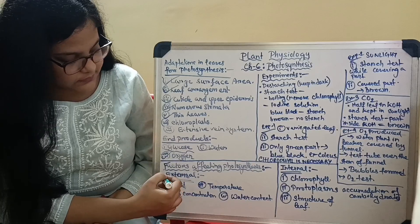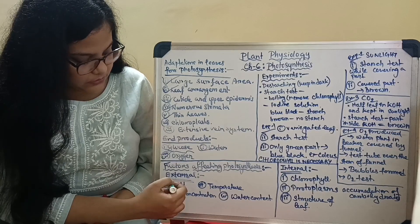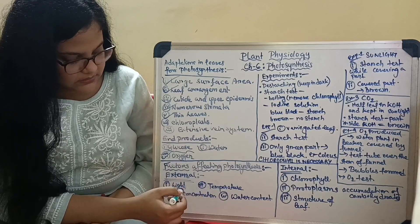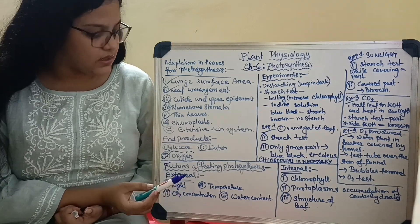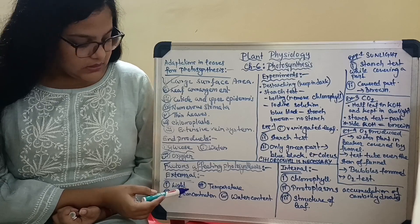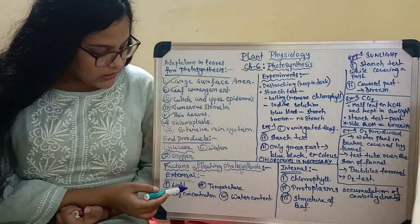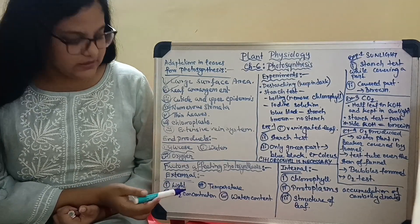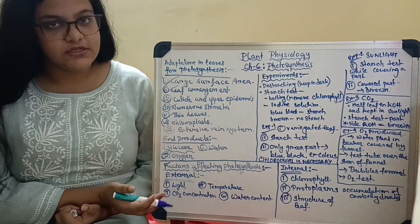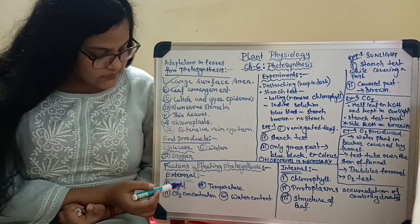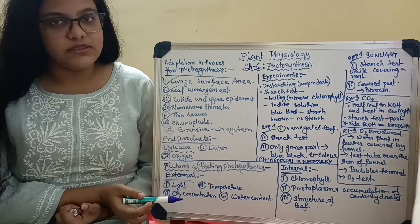Now let us move on to the factors affecting photosynthesis. The external factors include light intensity and CO2 concentration. You might think that since photosynthesis needs light, with increased light intensity the photosynthesis rate will always increase — but no. The photosynthesis rate increase along with light intensity increase will always be limited. Photosynthesis will increase with increasing light intensity only up to a certain level.